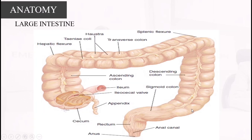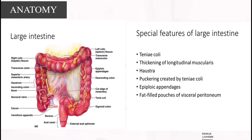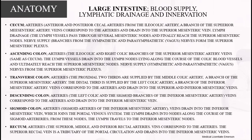The large intestine has special anatomical features including the taenia coli (thickening of the longitudinal muscle), haustra, and the appendices epiploicae. These distinguish it from the small bowel on imaging and examination.